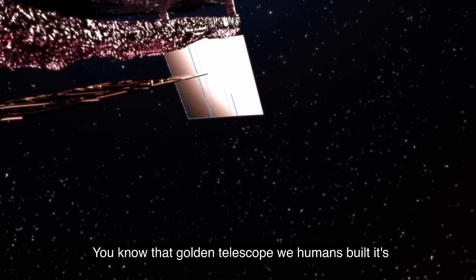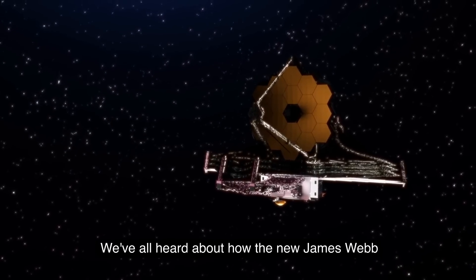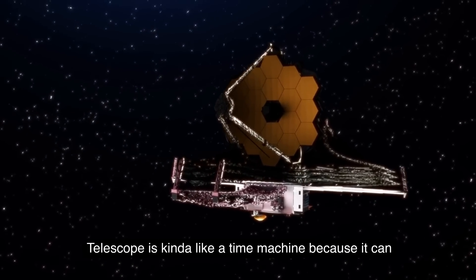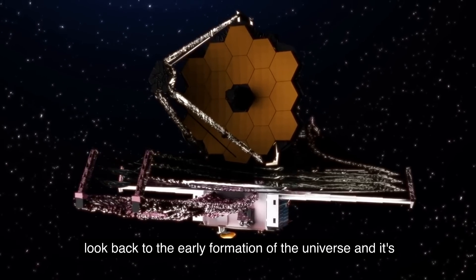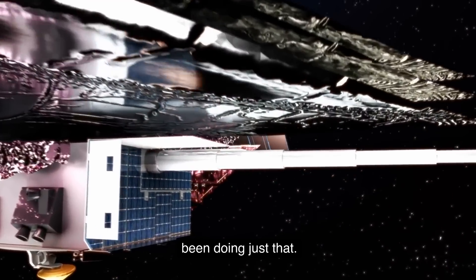You know that golden telescope we humans built? It's taking some mind-blowing pictures of space right now. Well, it turns out it's so powerful, it might have just shattered our understanding of the universe. We've all heard about how the new James Webb telescope is kind of like a time machine because it can look back to the early formation of the universe. And it's been doing just that.